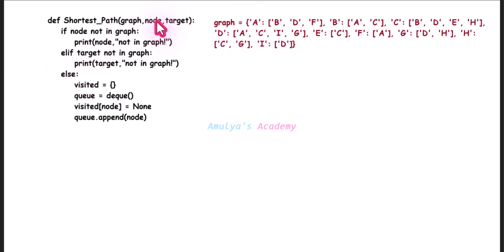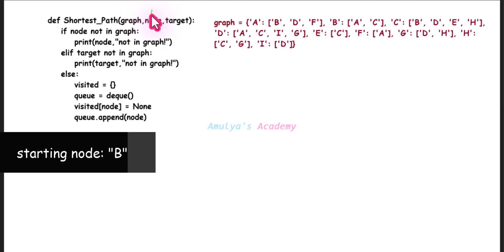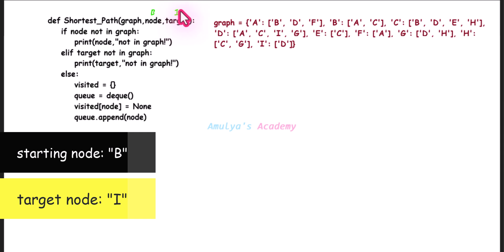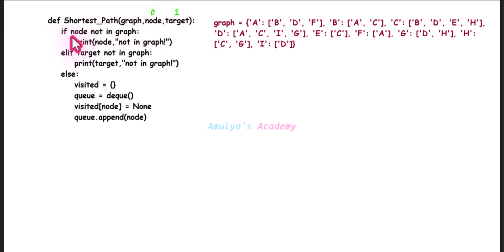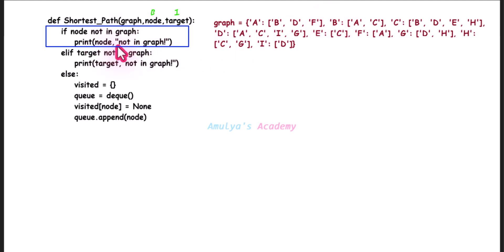Here graph is this graph, and for node let's take starting node as B and target node as I. We want to find the shortest path between B and I. First let's check if node not in graph — here node is B. B is present in the graph, so this condition becomes false.